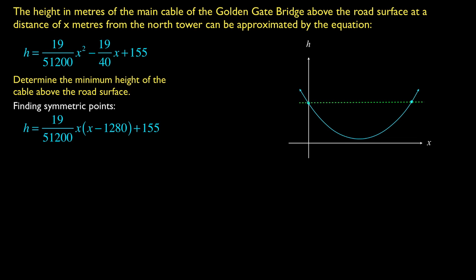What I see from that is that when x equals zero, much of what we see on the right-hand side of that equation vanishes, and we're just left with h equaling 155, and that becomes one of our symmetric points. The same is true if we allow x to equal 1280. Again, much of what you see on the right-hand side of that equation vanishes, and we're left with h being 155, and so we find the second symmetric point.